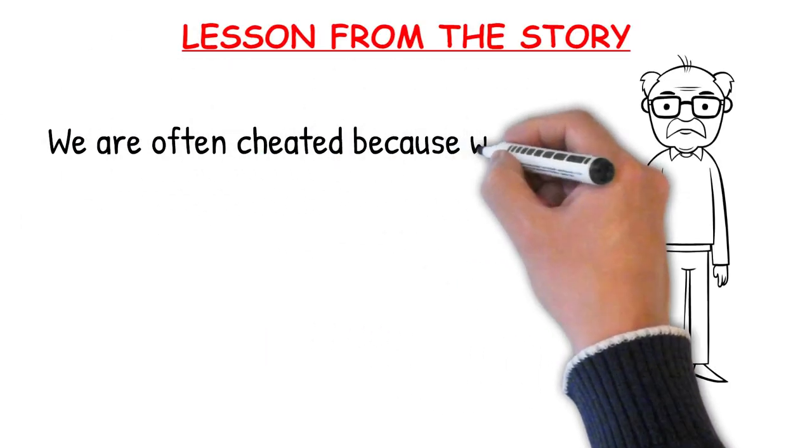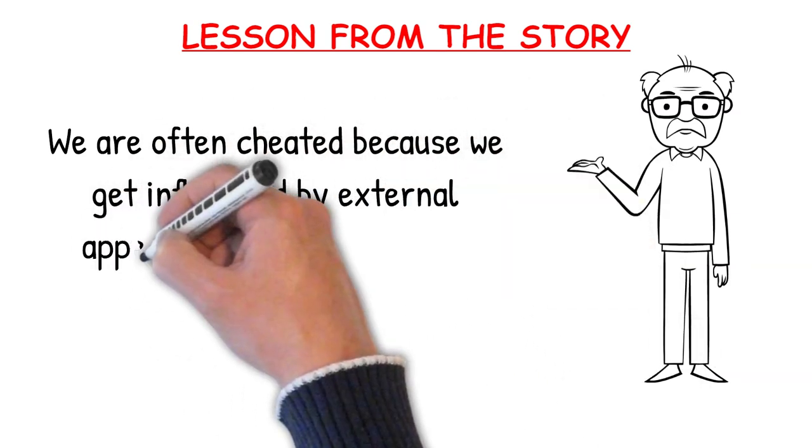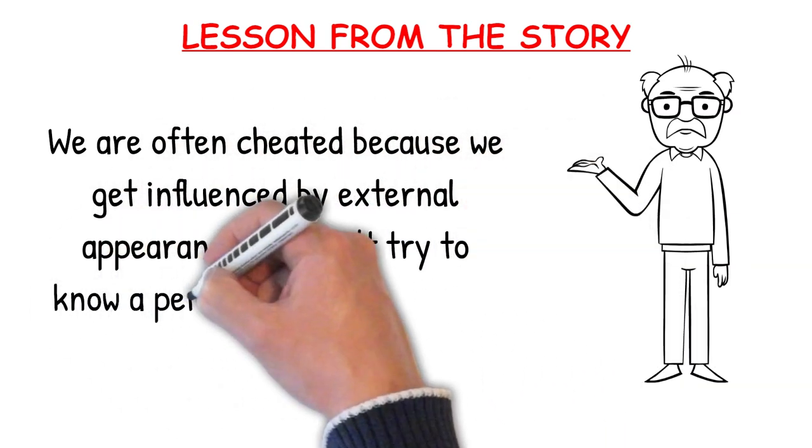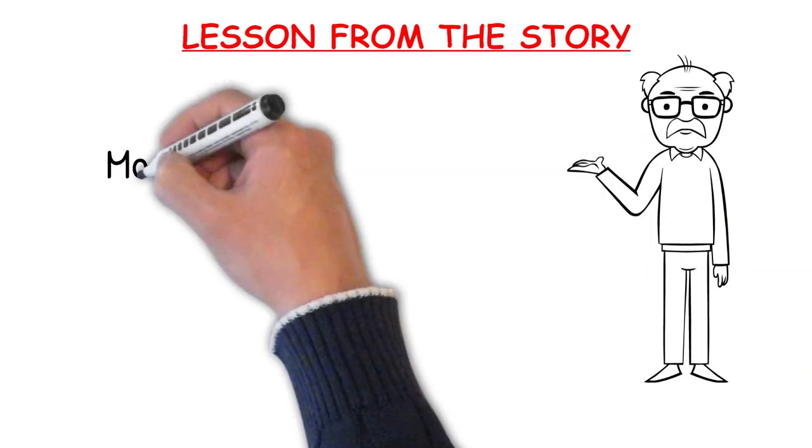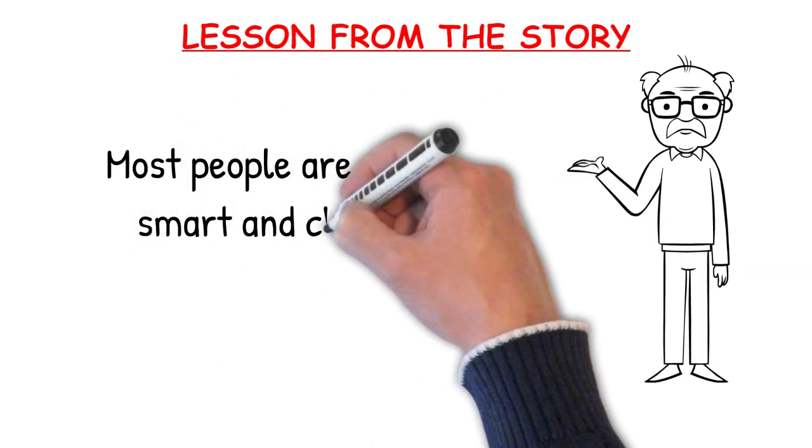We are often cheated because we get influenced by external appearance and don't try to know a person at a deeper level. Most people are quite smart and clever.